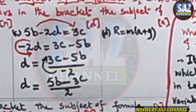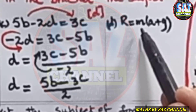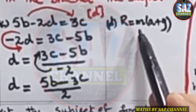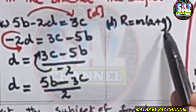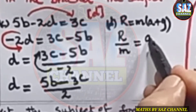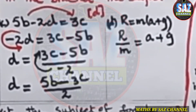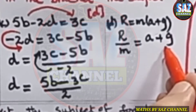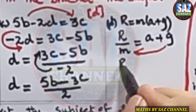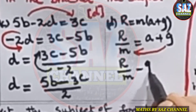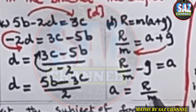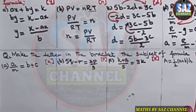Part D is r = m(a + g), and we want to make a the subject. The bracket is multiplied by m, so shift m to the other side: r/m = a + g. Then shift g to the other side: r/m − g = a, or finally a = r/m − g. Very easy and simple.